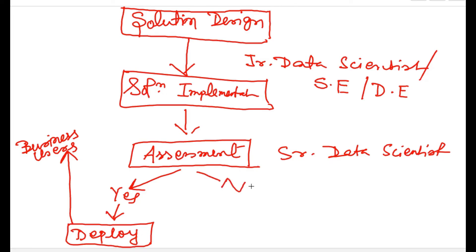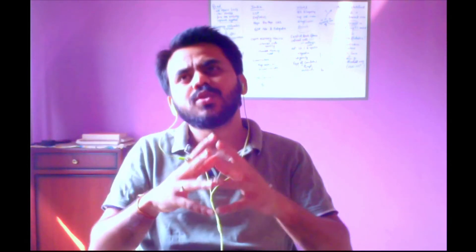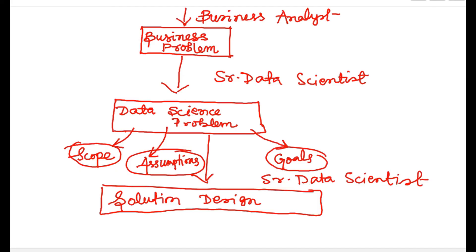If the assessment of the solution is not positive, you have to go back to the data science problem and solution design phase. Maybe the formulation, scope, or assumptions were not good enough, or something went wrong in the implementation phase. This loop keeps repeating — it's an iterative process.